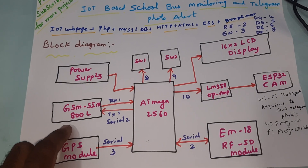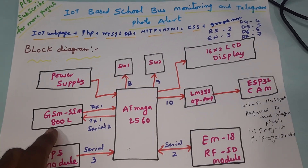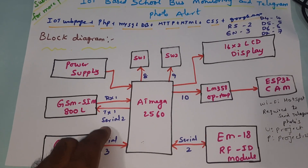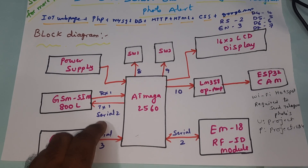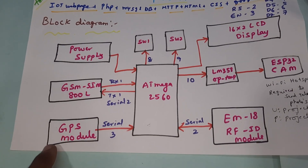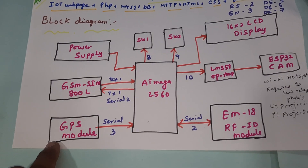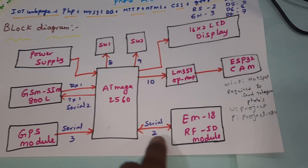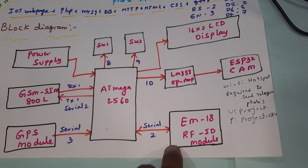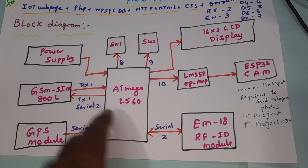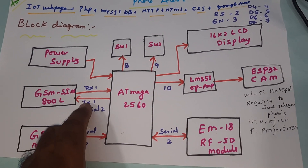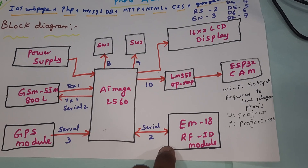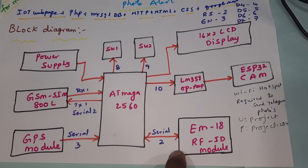In this project we are using one GSM SIM900A with RX/TX connected via serial communication 2. A GPS module is connected with serial communication 3, and serial communication 2 is connected to the EM18 RFID module.